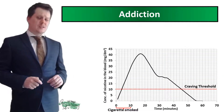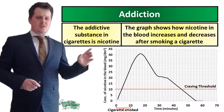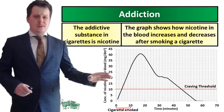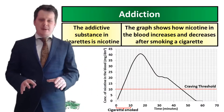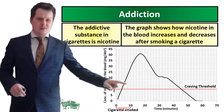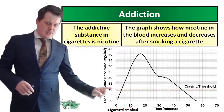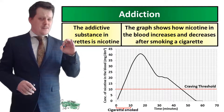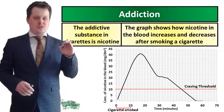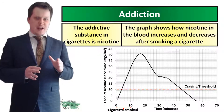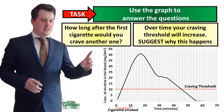Now we're going to look at addiction in terms of cigarettes. The addictive substance in cigarettes is called nicotine. This graph shows how nicotine in the blood increases and decreases after smoking a cigarette. We smoked a cigarette between zero and ten minutes, and you can see the nicotine concentration goes up and then slowly begins to go down. The red line shows our craving threshold — when nicotine levels fall below that line, the body stops feeling normal and you crave another cigarette. Use this graph to answer the questions.